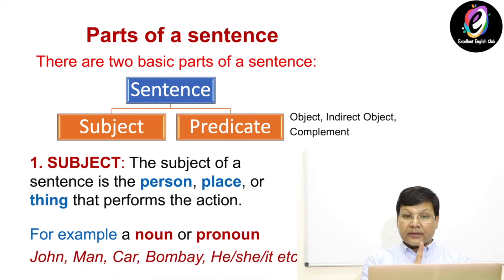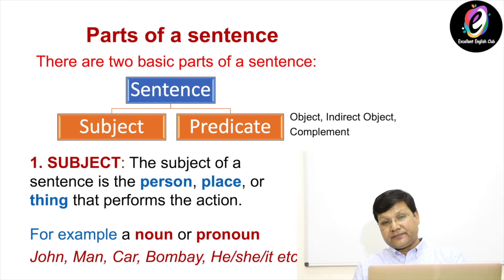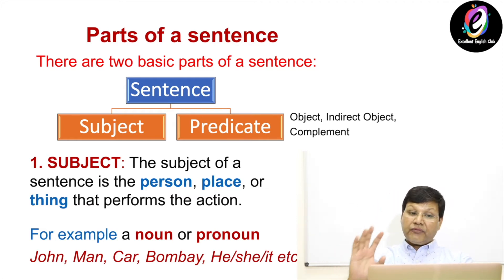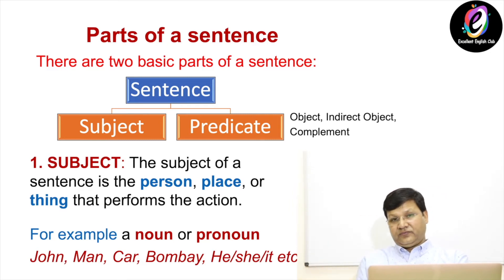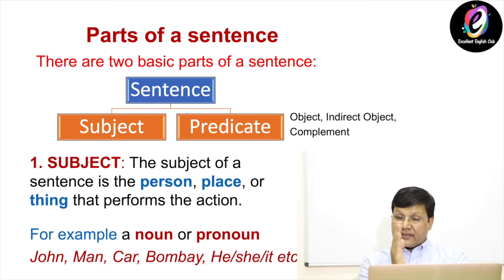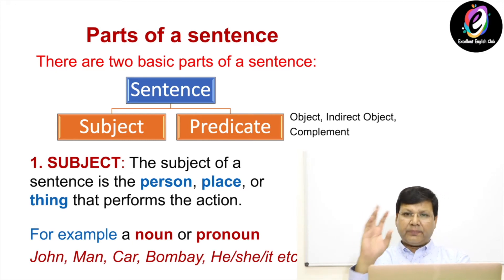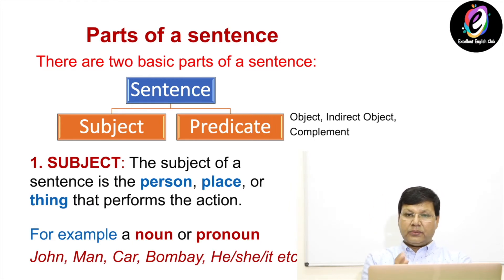First, subject. The subject of a sentence is the person, place, or thing that performs the action. For example, if I say 'Ram is playing' — what is he doing? He is playing. So who is Ram? Ram is the subject. The rest of the part, 'is playing,' is the predicate. So any noun — name of a place, name of a person, name of a thing — all these nouns will be a subject.